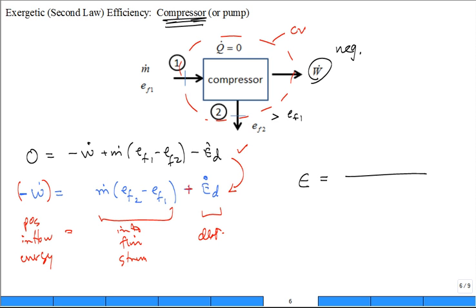What do we want? We want M dot EF2 minus EF1 to be large compared to minus W dot. And that's exactly the same equation developed in the textbook. And I want it to be consistent with the textbook.